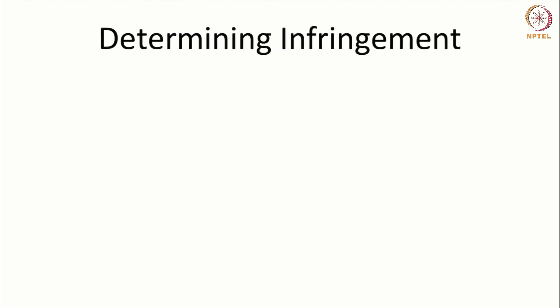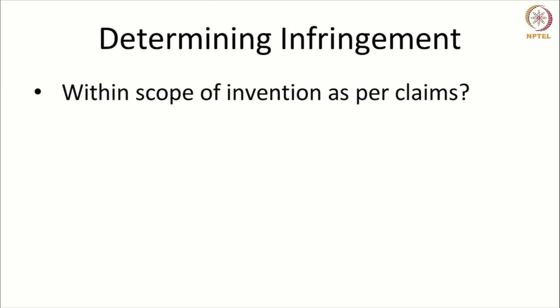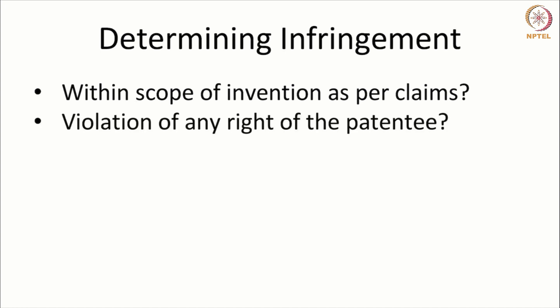How do we determine infringement? The first thing is to see whether the act alleged to be an infringement falls within the scope of the invention as per the claims. So we have to determine the scope of the claims first. Second, we will have to see whether there is a violation of any right of the patentee. It is not just sufficient that the scope of the invention is determined, but a violation should also be established. There could be instances where an act may fall within the scope of the claim but may not violate any right of the patentee.